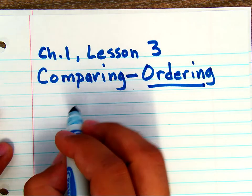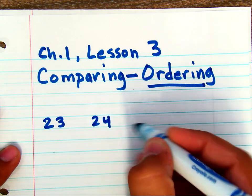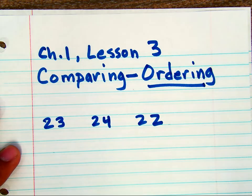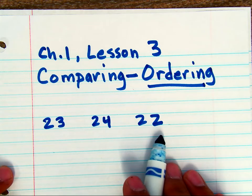So if you have a number like 23, 24, and 22, now these are second grade numbers, two digit numbers, and in third grade we'll use larger numbers, but the concept is the same.